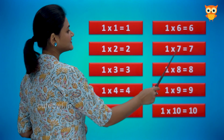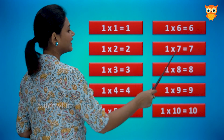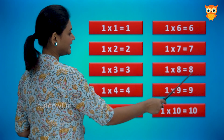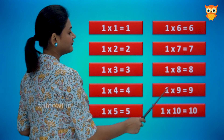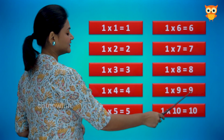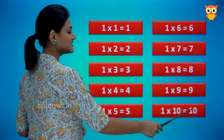One sevens are seven. One eights are eight. One nines are nine. One tens are ten.